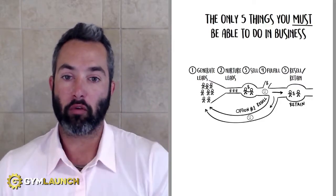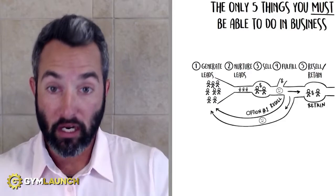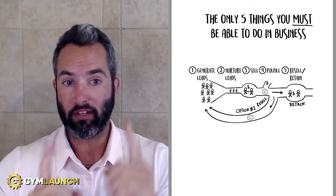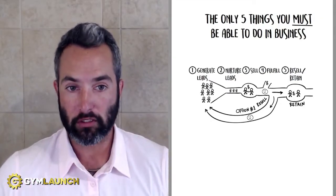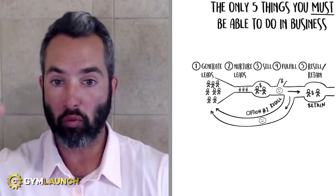And if you think about these five core functions, a way to be able to figure out if you have bottlenecks in your business is to rate yourself on a scale of one to five in each one of these five core functions. So on generating leads, scale one to five, can you consistently generate leads for your business? Where do you rank?